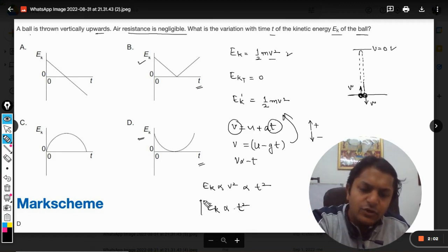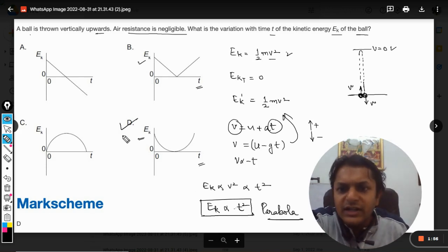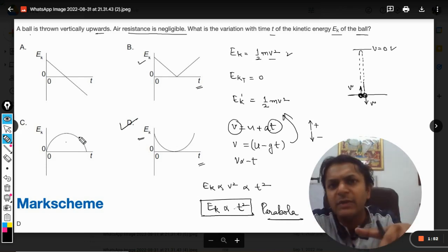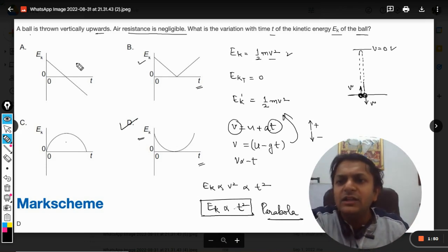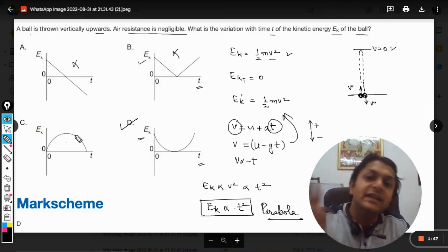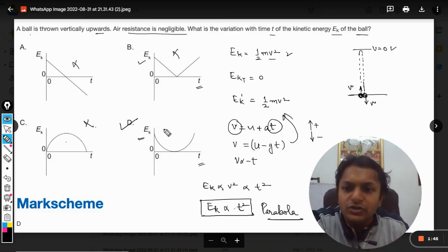So this will be our graph which becomes a parabola. So D will be the correct answer. This is also they have shown it in a circular manner, but this is a parabola. This is a straight line wrong, straight line wrong, parabola in the opposite sense again wrong.